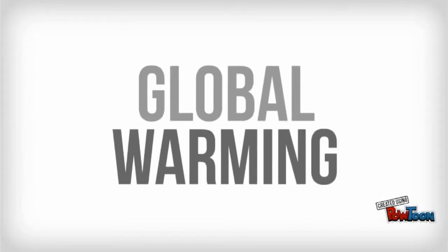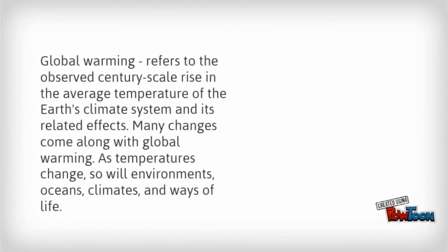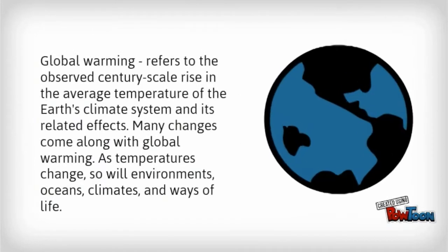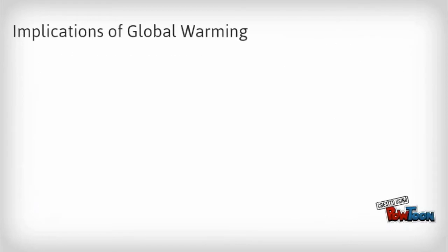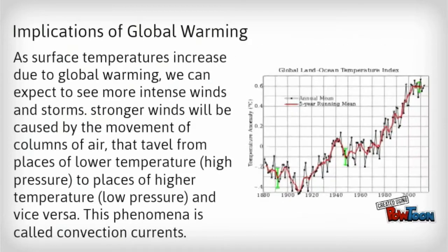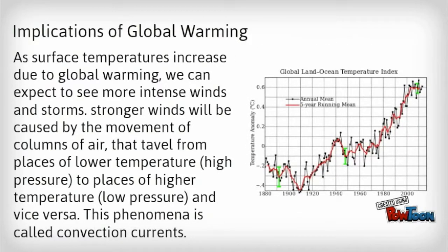Global warming refers to the observed century-scale rise in the average temperature of the Earth's climate system and its related effects. Many changes come along with global warming. As temperatures change, so will environments, oceans, climates, and ways of life. Here are some implications of global warming.